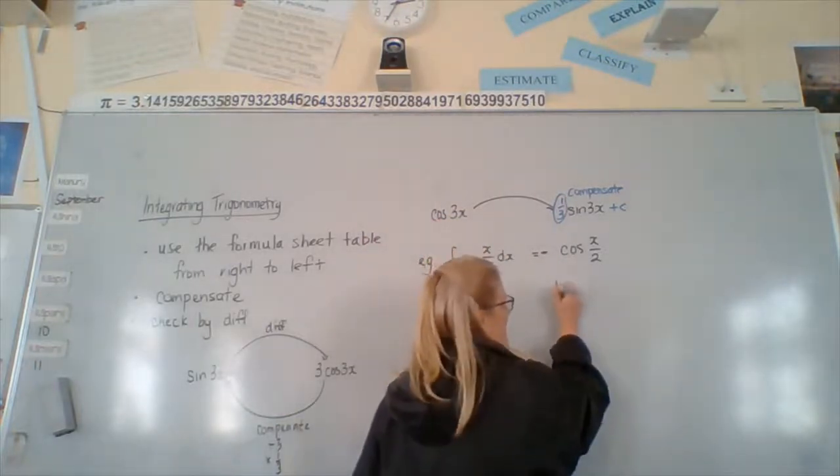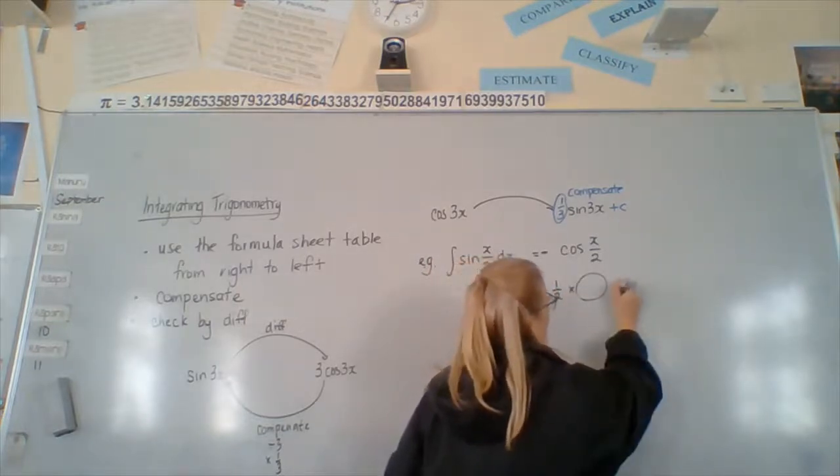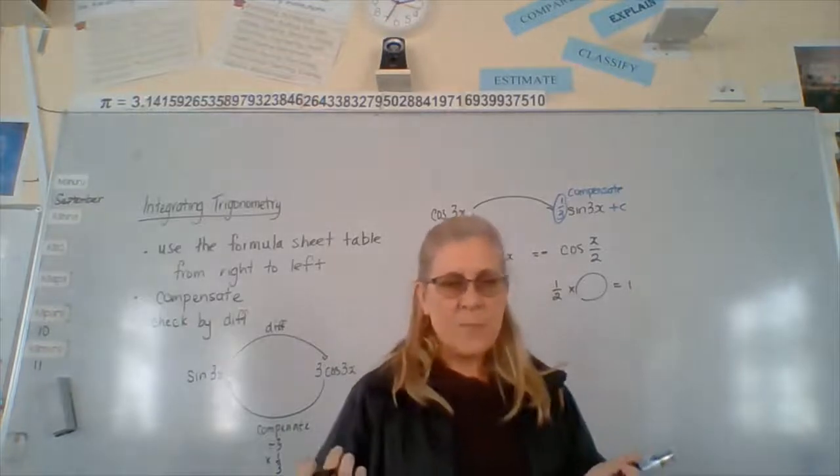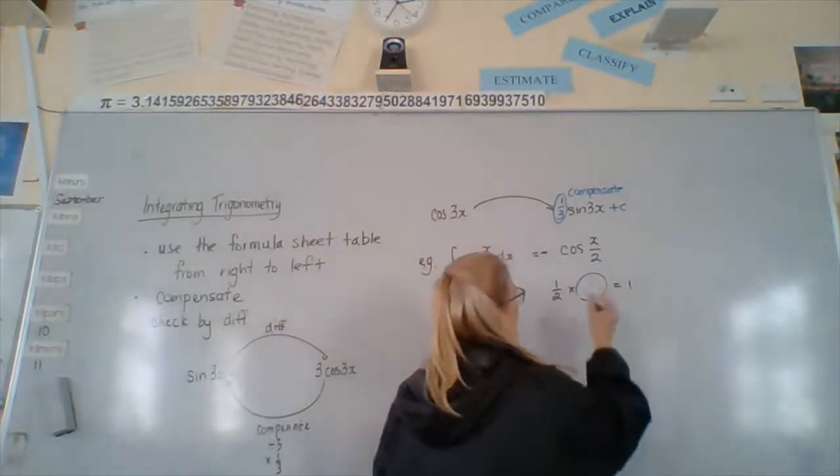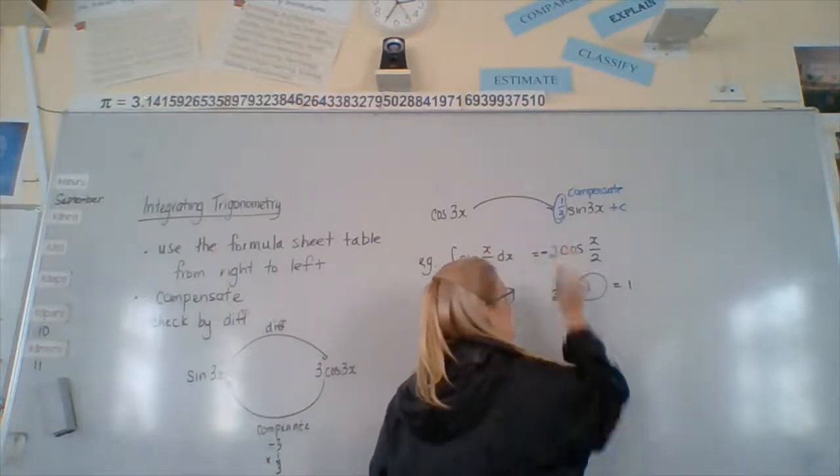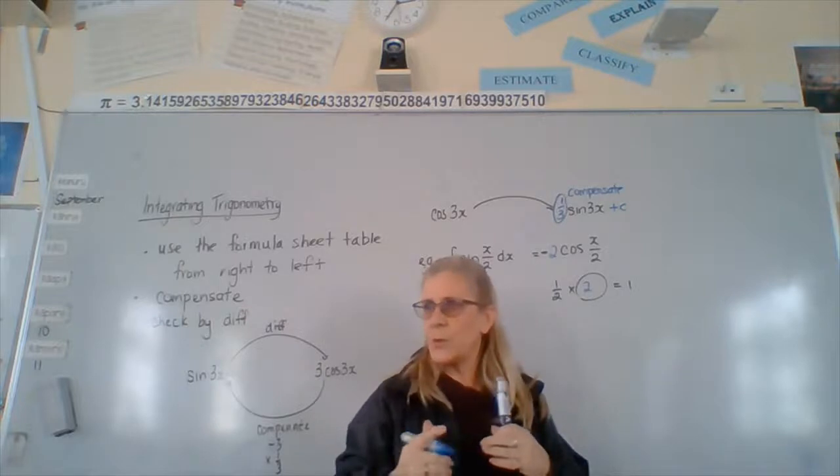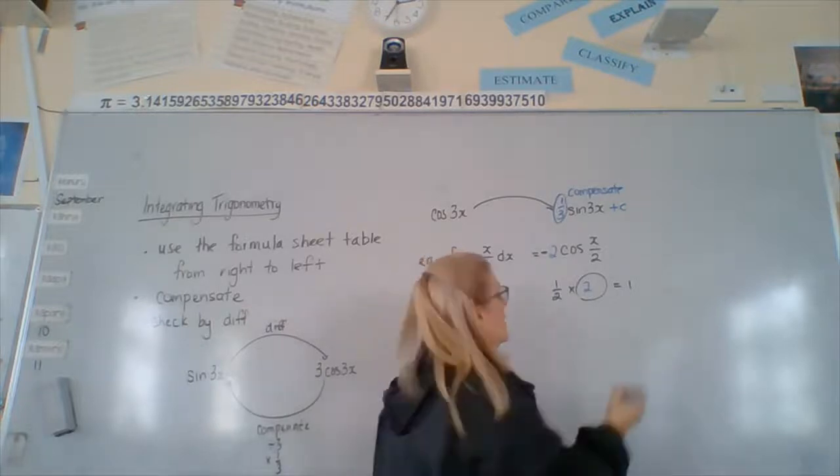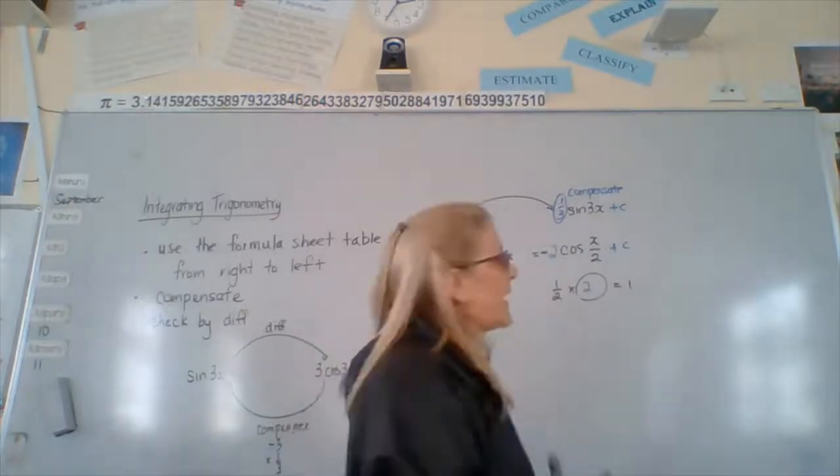So, basically, we're saying a half x what, our compensation, equals 1. Because it's multiplied by 1. So, that's going to be 2. So, 2 is our compensation in this case because it's a half. So, we wouldn't go 1 over 1 over 2, which is 2, plus c.